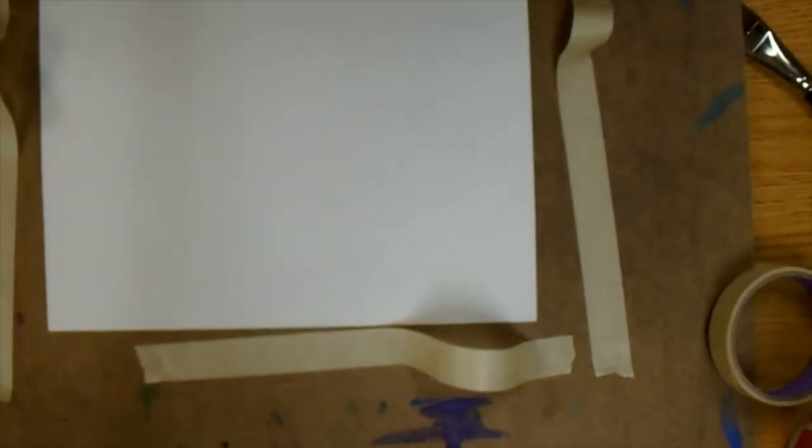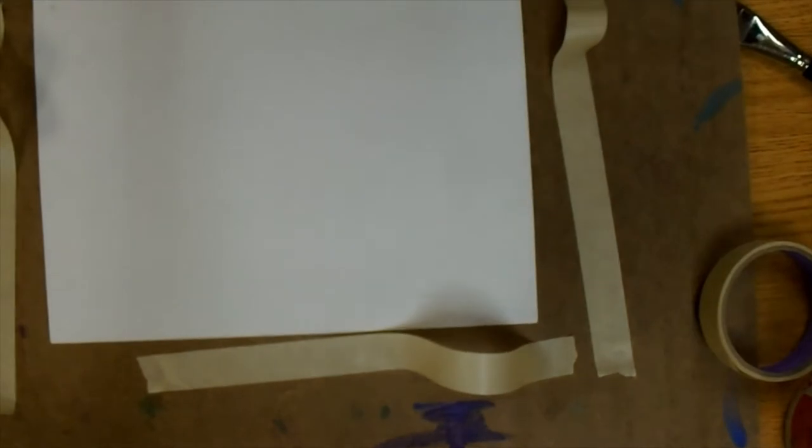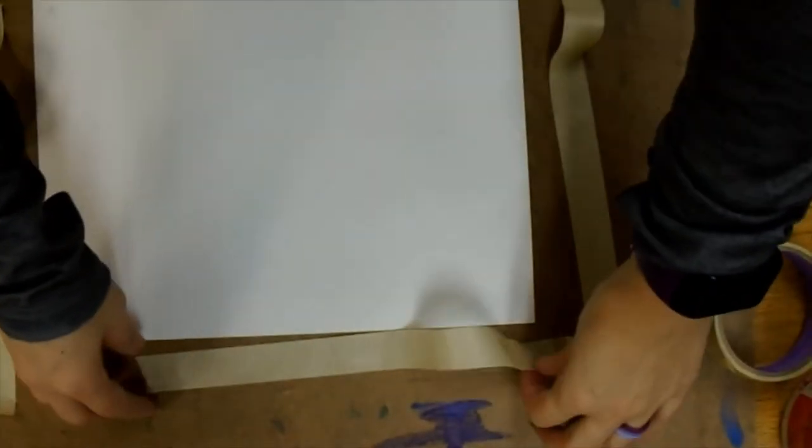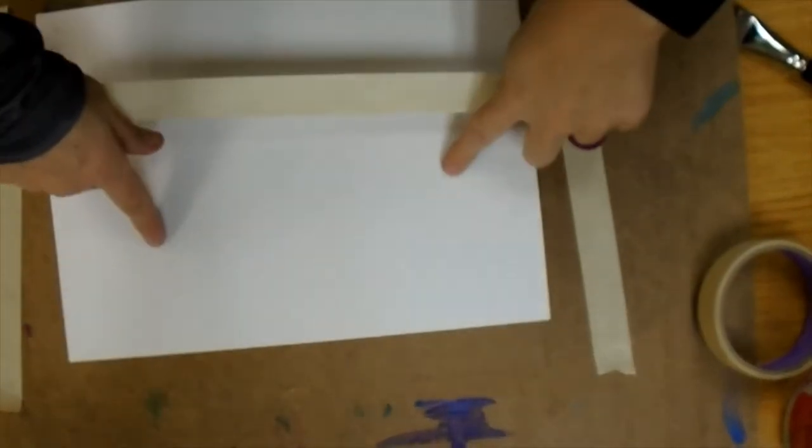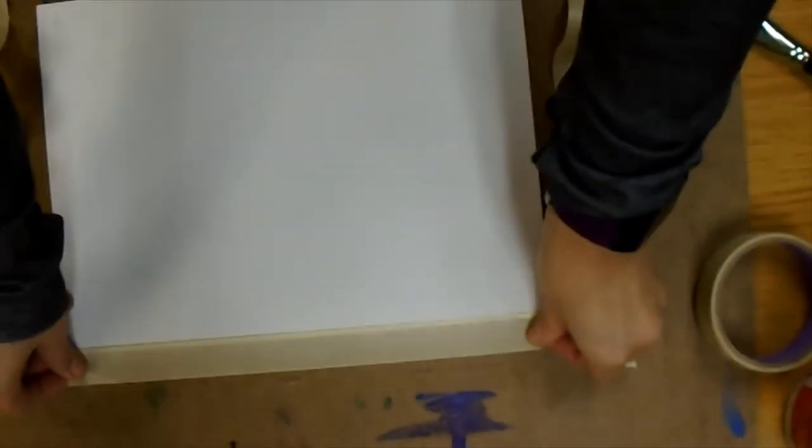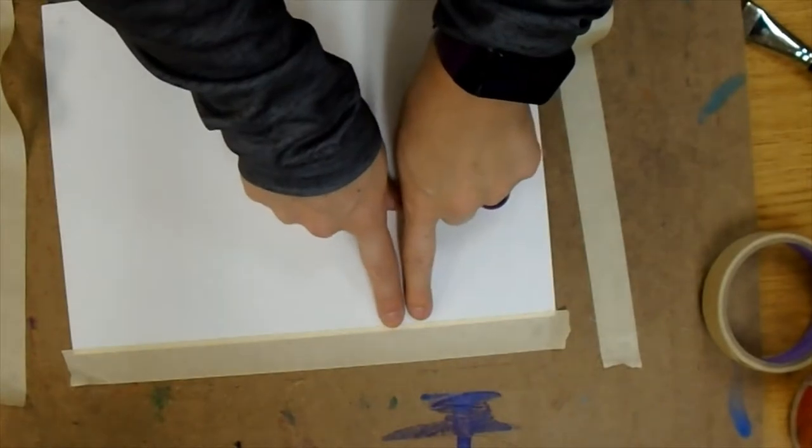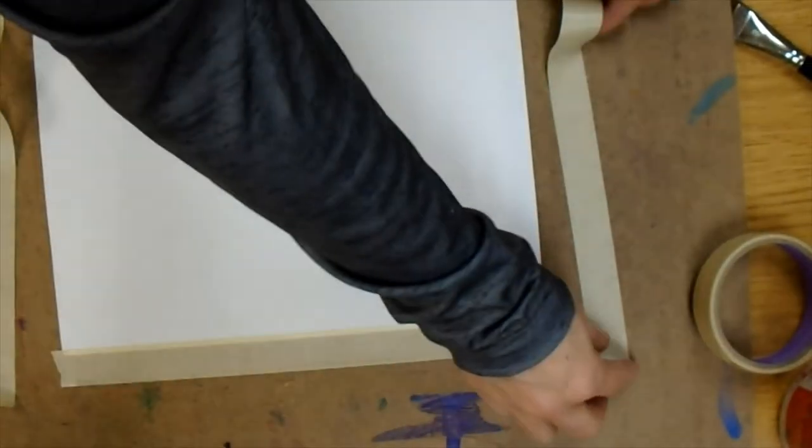Then what you're going to do is you're going to take the individual piece of tape, you're going to pull it tight and lay it down so just a small portion of the tape is holding down the paper. This is called dry stretching.